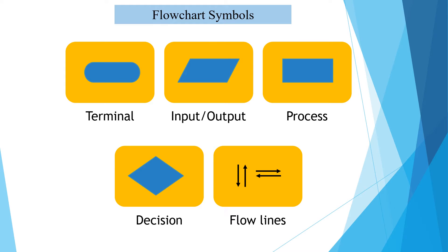The second symbol is a tailed rectangle, and it is named as input or output. This symbol indicates an input or output task which we are performing in solving the problem. Inputting means we read a number or input the radius. Output means we display the area or display some result.